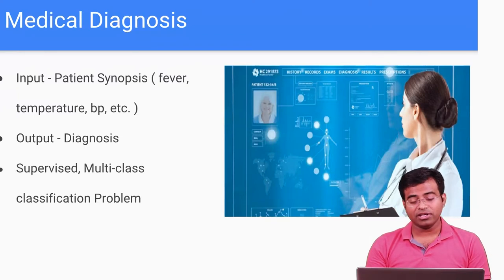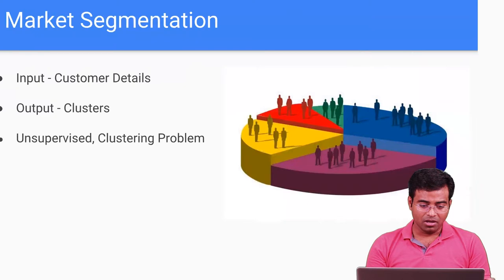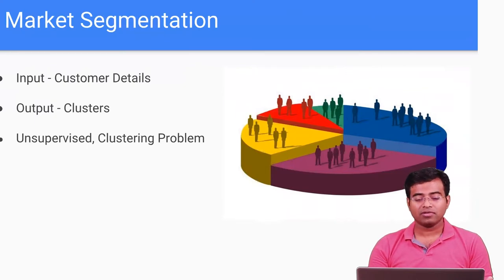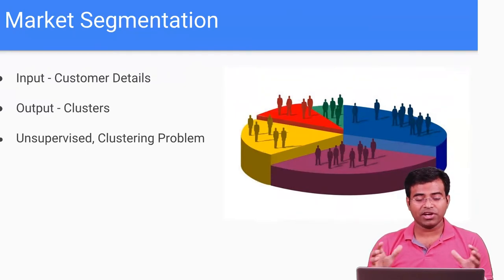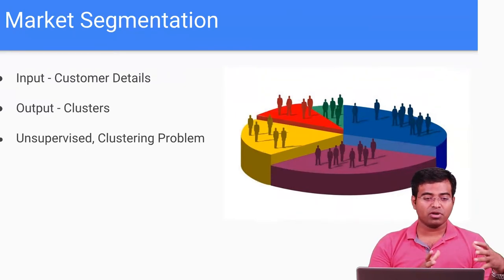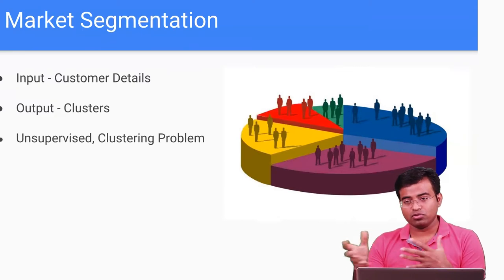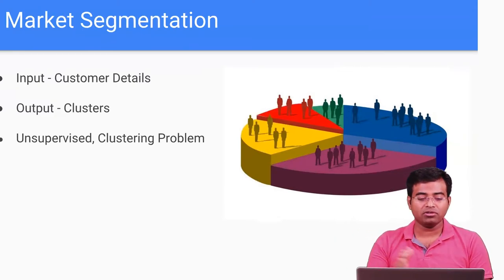Another application is market segmentation. Suppose you are launching a new product and want to know how to market it — what are the possible options. Market segmentation is an important aspect: you find similar customers, put them in one bracket, and give them the same type of ad. Of course, you have rich customers you want to sell high-end products to, not low-end products. This is what market segmentation does — it helps you strategize your business.